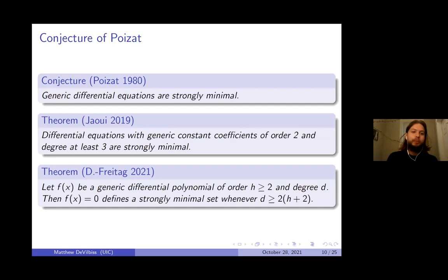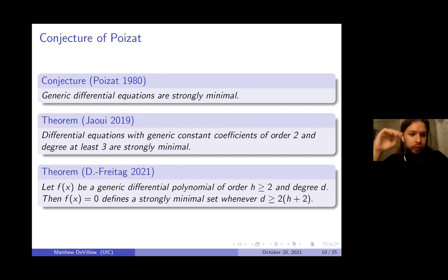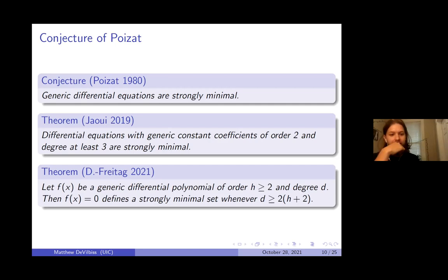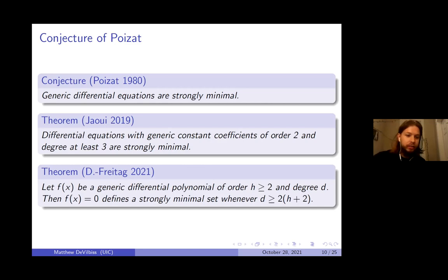In 2019, Jaoui showed that differential equations with generic constant coefficients of order two and degree at least three are strongly minimal — moreover, that they're geometrically trivial. The theorem I'll be talking about: if F is generic in the second sense, where the coefficients are differentially independent and the degree D is sufficiently large, then this equation is also strongly minimal.